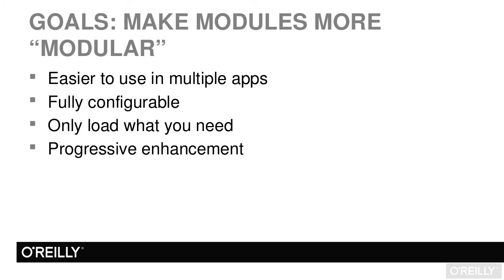We'll also talk about only loading what you need and progressive enhancement. As front-end developers, we often talk about progressive enhancement based on what a browser can do — does it have JavaScript, can it handle 3D transformations, things like that. What we mean here, though, is what is already available within my Angular application? For example, if you've got a content plugin that optionally can parse Markdown, then you only want to look for that Markdown plugin if the configuration says you want it. And you don't want to blow up the entire Angular app just because someone didn't load Markdown.parser in their original app requirements.